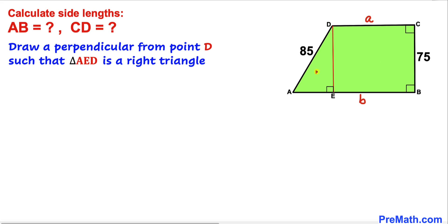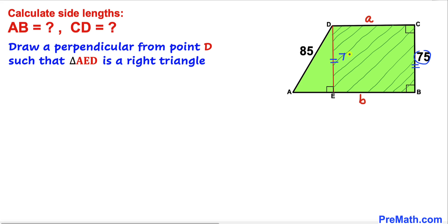Now we have right triangle AED. Let's focus on rectangle EBCD. Since BC is 75, side length ED is also 75 units. Since side length CD is a units, side length EB is also a units.